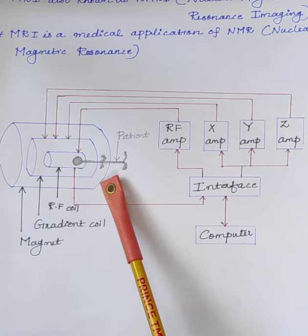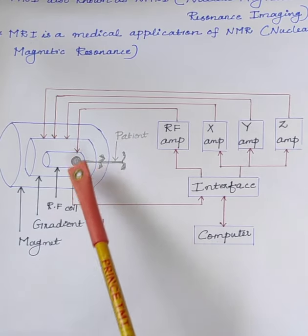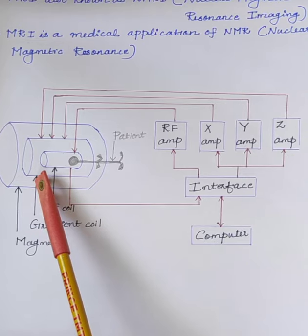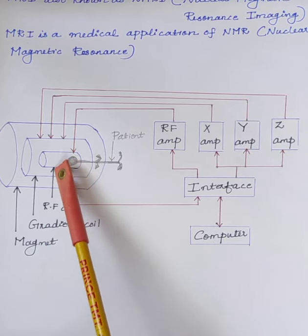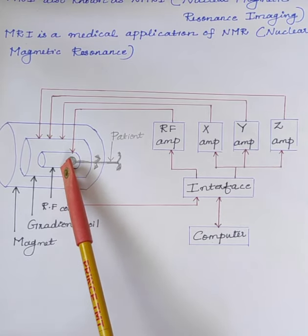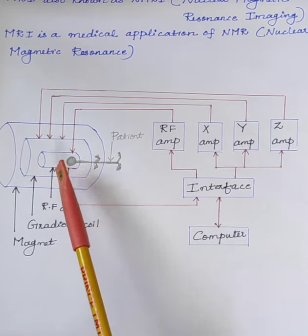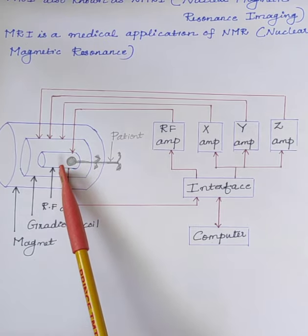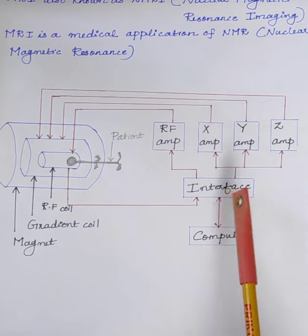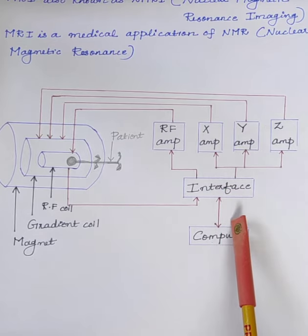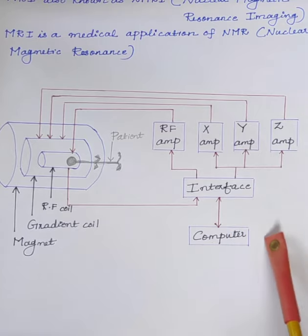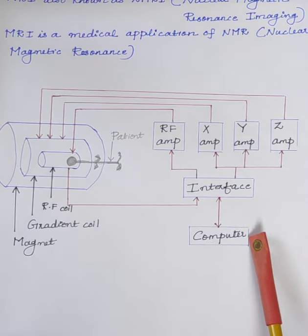Here, magnet is used to polarize the atoms, and the gradient coils are used to localize the region to be scanned. The radiofrequency coil detects the resulting NMR signals. These are given to the interface circuit, and the computer is used to create the images. The whole system is controlled by one or more computers.